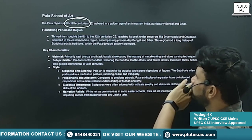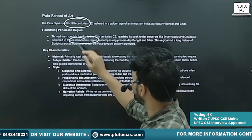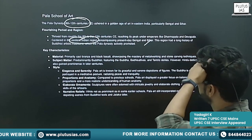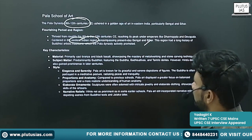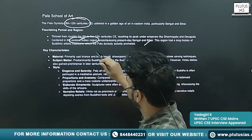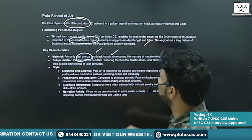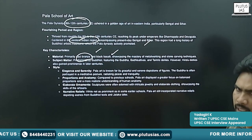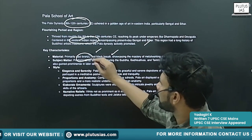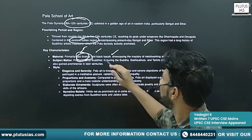Region: it is centered in the eastern Indian region, encompassing present-day Bengal and Bihar. Key characteristics: the primary materials are cast bronze and black basalt.